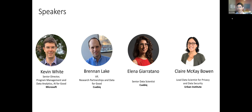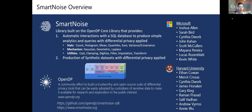SmartNoise is built on top of the OpenDP core library and supports two primary application scenarios. The first is the ability to do automatic interactions with a SQL database — producing simple analytics on queries with differential privacy applied — things like counts, histograms, means, and quantiles with different mechanisms. A lot of these come from the OpenDP core library, and what we're doing is surfacing them in a way that allows you to interact with a SQL database.